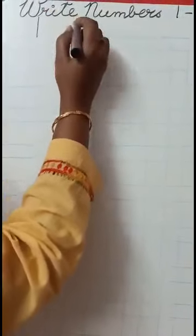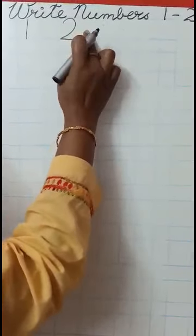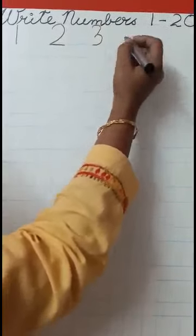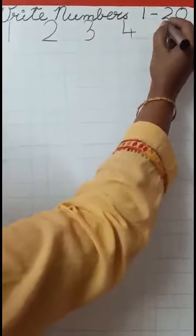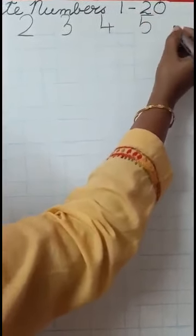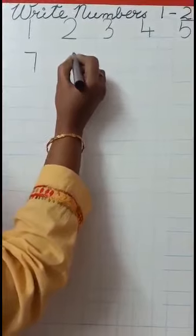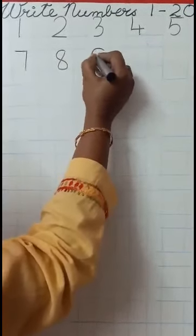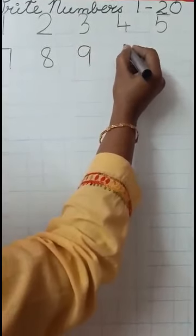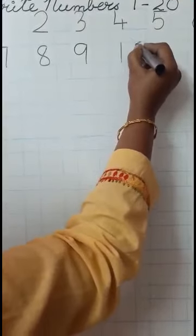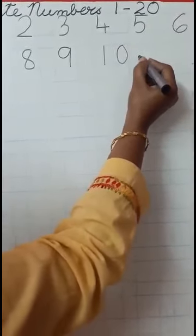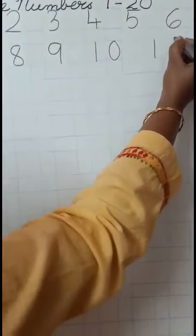Now children, we are going to write numbers 1 to 20. You will write neatly in the box. Leave 1 box, write 1. Leave 1 box, write 2. Leave 1 box, write 3. Leave 1 box, write 4. Leave 1 box, write 5. Leave 1 box, write 6. Again, same way come down. Leave 1 box, write 7. Leave 1 box, write 8. Leave 1 box, write 9. Leave 1 box. Now you will change — 1 number in 1 box and 0 in another box: 10. Leave 1 box. 1 in 1 box and 1 in 1 box: 11.